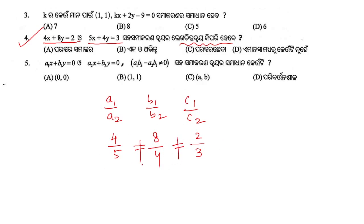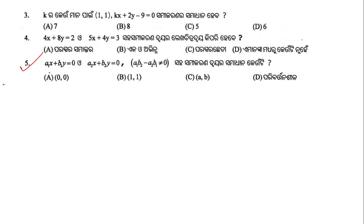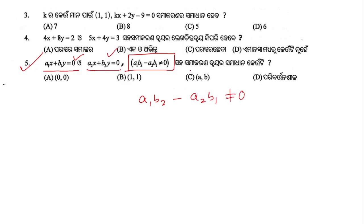For a system of homogeneous equations a1x + b1y = 0 and a2x + b2y = 0, the condition for a unique solution (other than the trivial solution) is that a1·b2 - a2·b1 is not equal to 0.